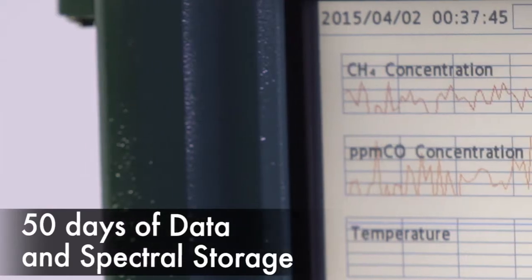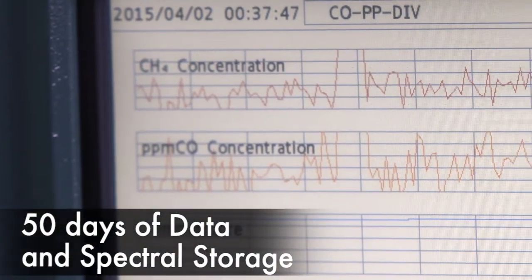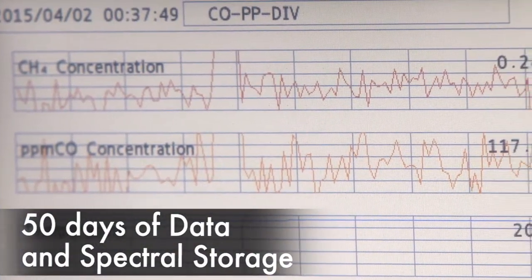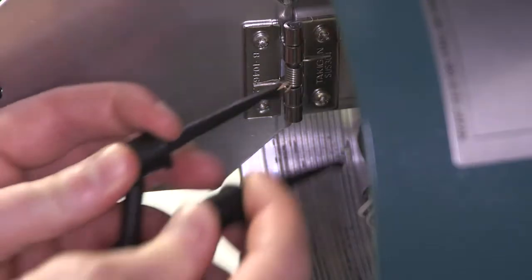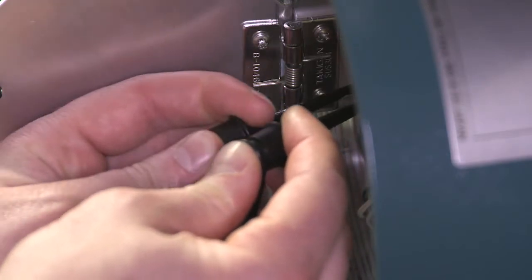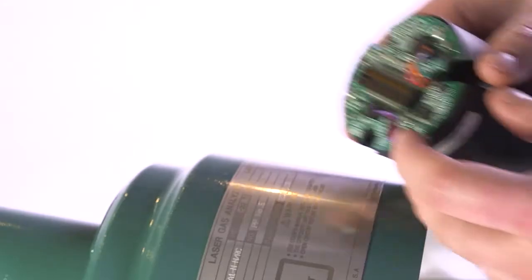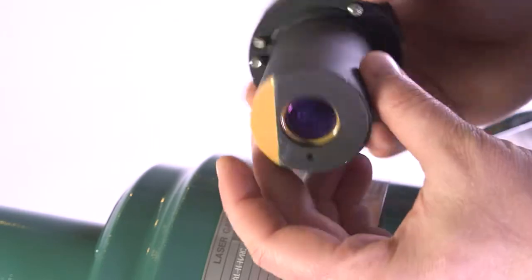Eight stages of auto-gain adaptation for touch-free transmission optimization. 50 days of data and spectral storage in an onboard historian allows remote factory troubleshooting. All hardware is fully field repairable to minimize downtime, and configuration data is stored on our unique smart laser module.